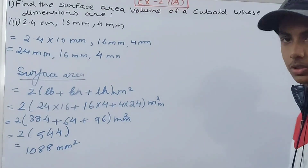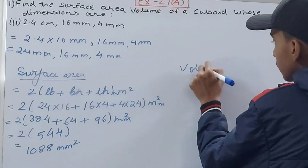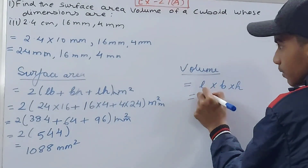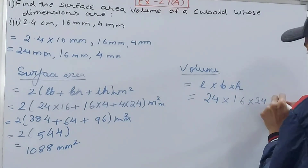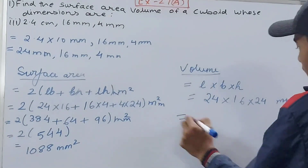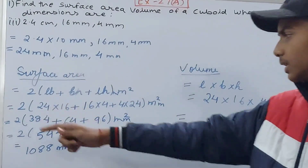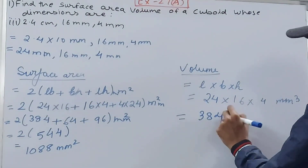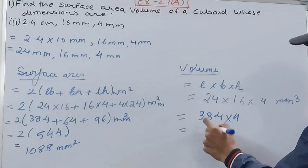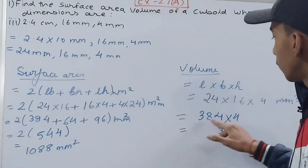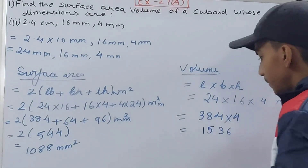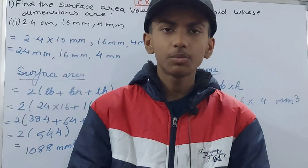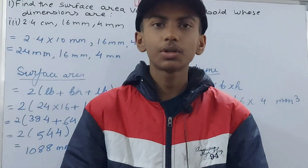Now the volume: Volume = length × breadth × height = 24 × 16 × 4. We have 24 × 16 = 384, and 384 × 4 = 1536 cubic millimeters. That is your volume. Friends, this is all for today. If you are new to my YouTube channel, do not forget to subscribe and leave a like. Till then, take good care of yourselves. Bye bye!